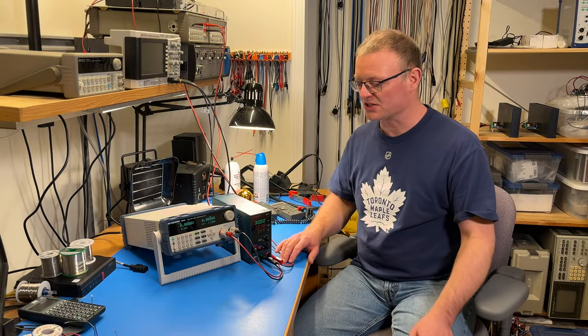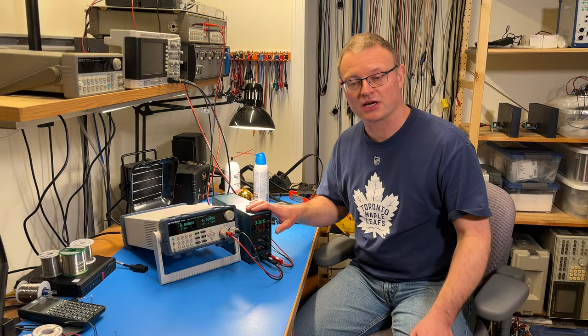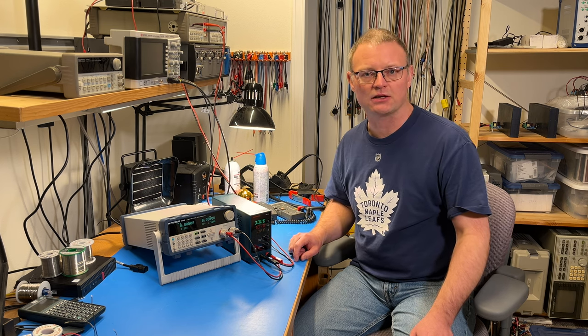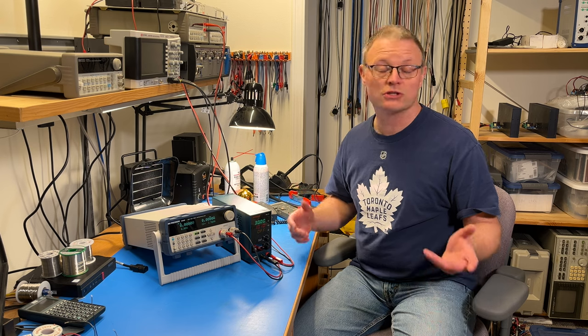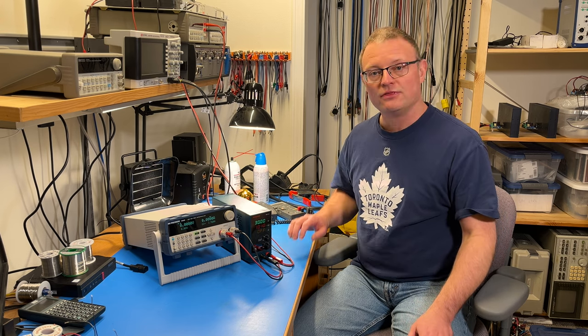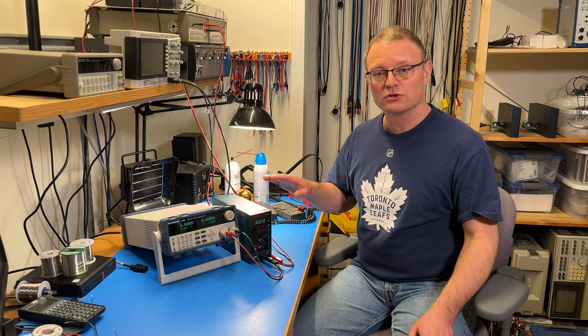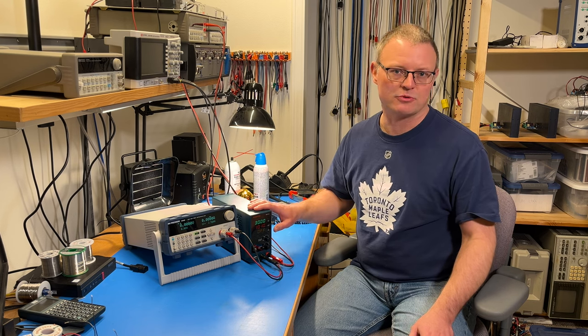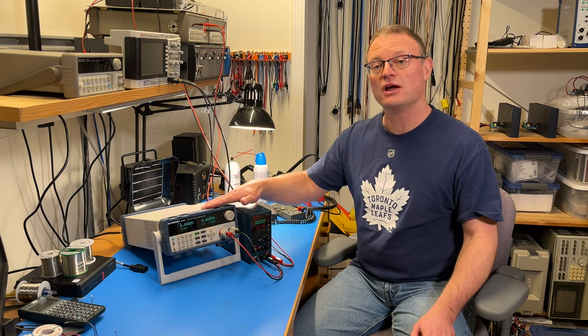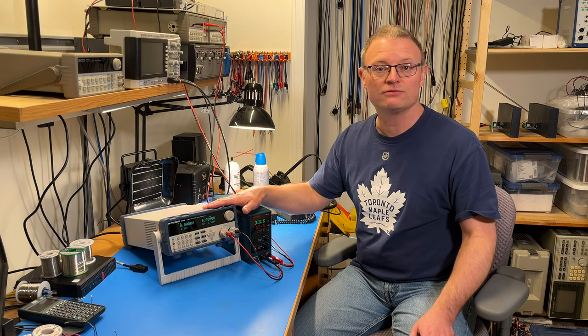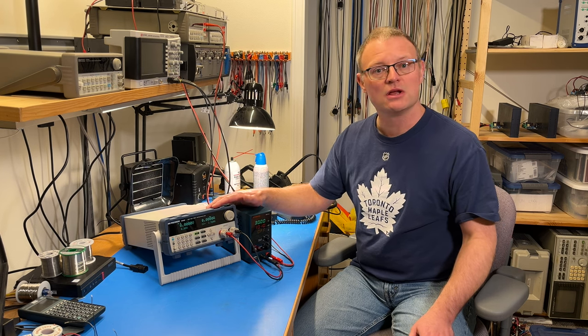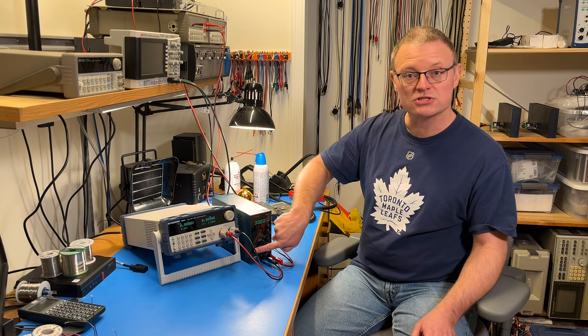For this part of the torture test, I have the output of the Hanmatek connected to my speaker dummy load. So that is a 4 ohm resistor that can handle 500 watts. Unfortunately, it's also fan cooled. So there will be a little bit more noise in here, but such is life. That 4 ohm resistor will draw about 7.5 amps from the power supply. And I need to draw a total of 10. So to pick up the slack, I have the electronic load configured such that the total load on the power supply is 300 watts. Let's power this puppy on and see how this goes.